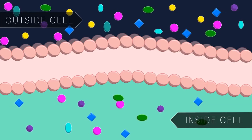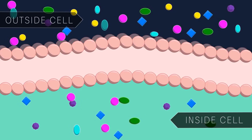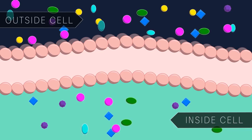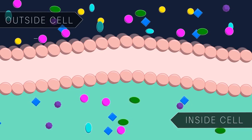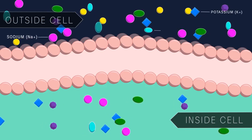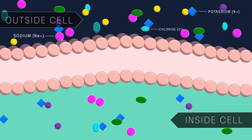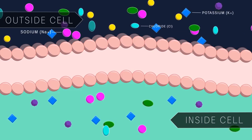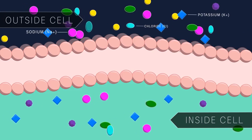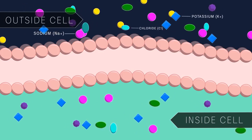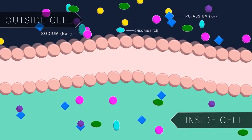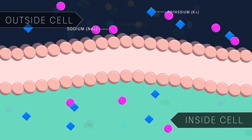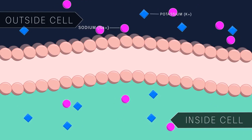Transmission of a neuronal signal is entirely dependent on the movement of ions, or charged particles. Various ions, including sodium, potassium, and chloride, are unequally distributed between the inside and the outside of the cell. The presence and movement of these ions is not only important when a neuron fires, but also at rest. To start, let's think about the positively charged sodium and potassium ions.